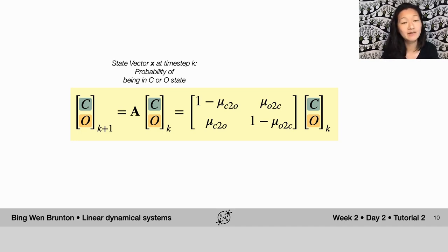In particular, instead of specifying x dot, the derivative of x with respect to time, here we're actually using A to specify a map of what's happening from every time k to the next time step k plus 1.